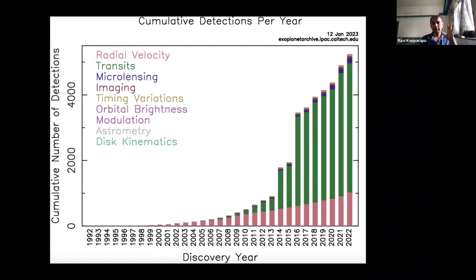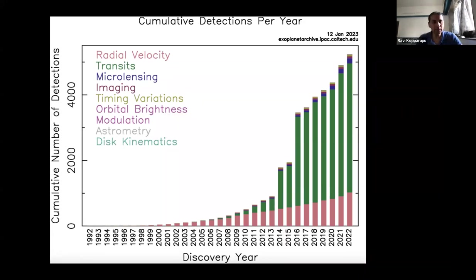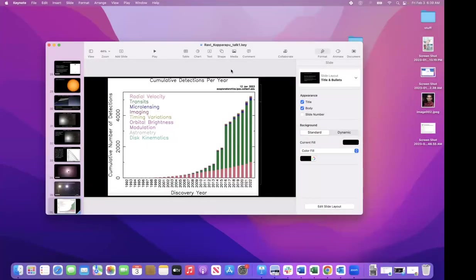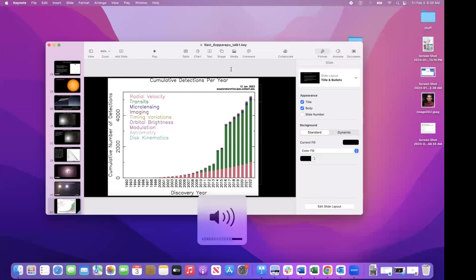Until now I've discussed only the detection techniques. Now I'm going to go into the statistics of planets we've been observing. I'll pause here and see if anybody has any questions on the detection techniques. There are a few questions. There is a question by Tejas asking: is there a limiting mass ratio for which the radial velocity technique is effective?